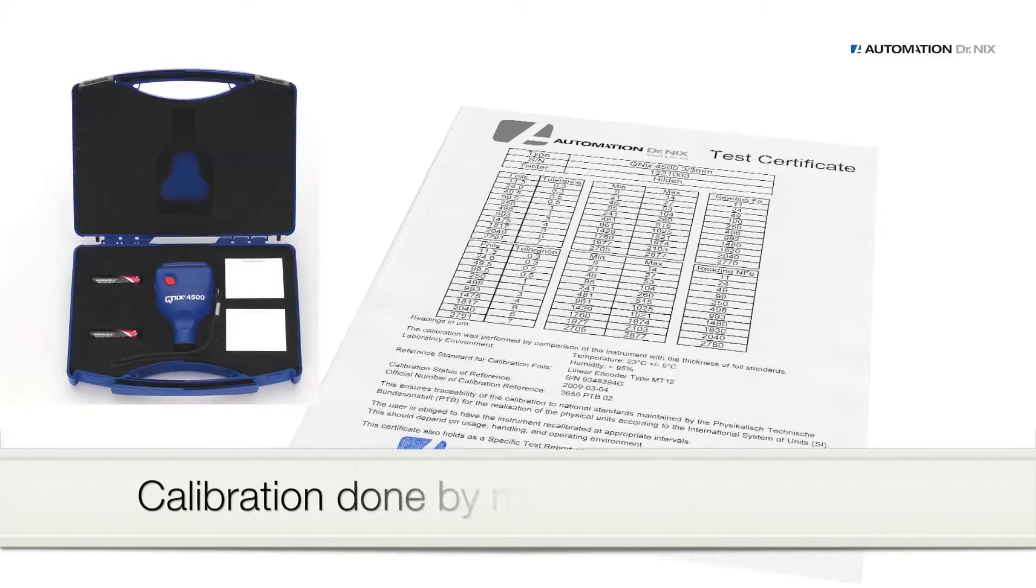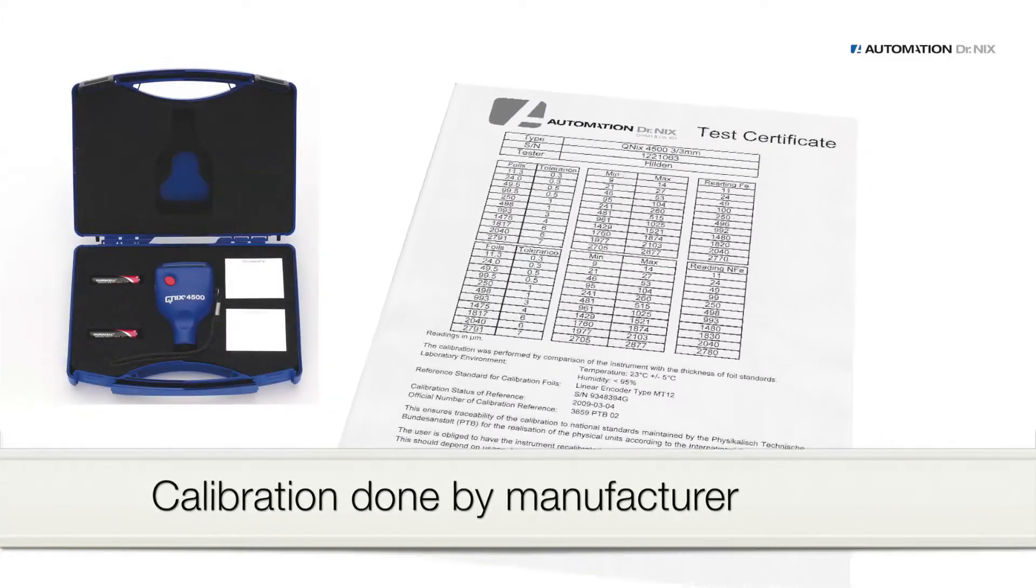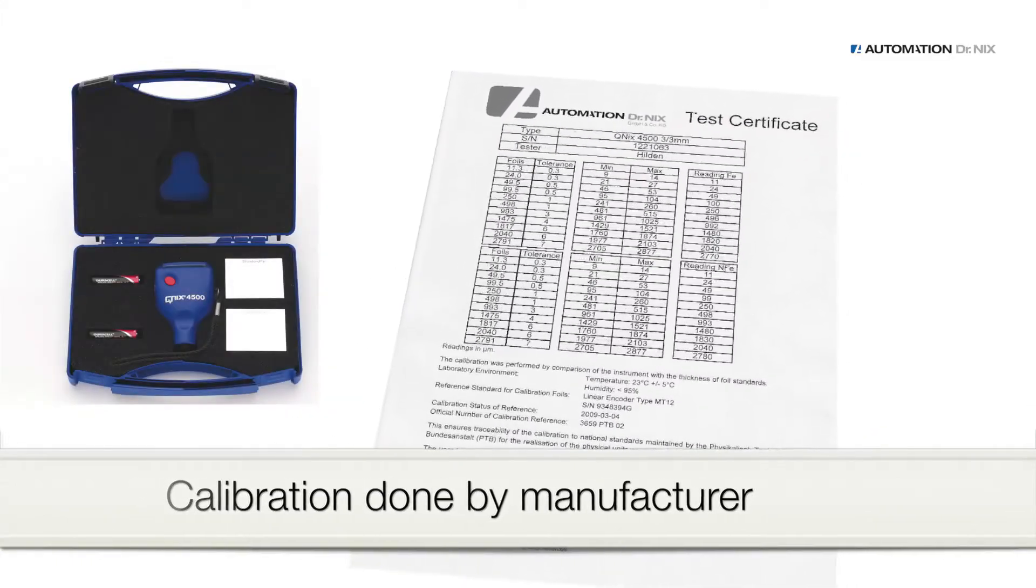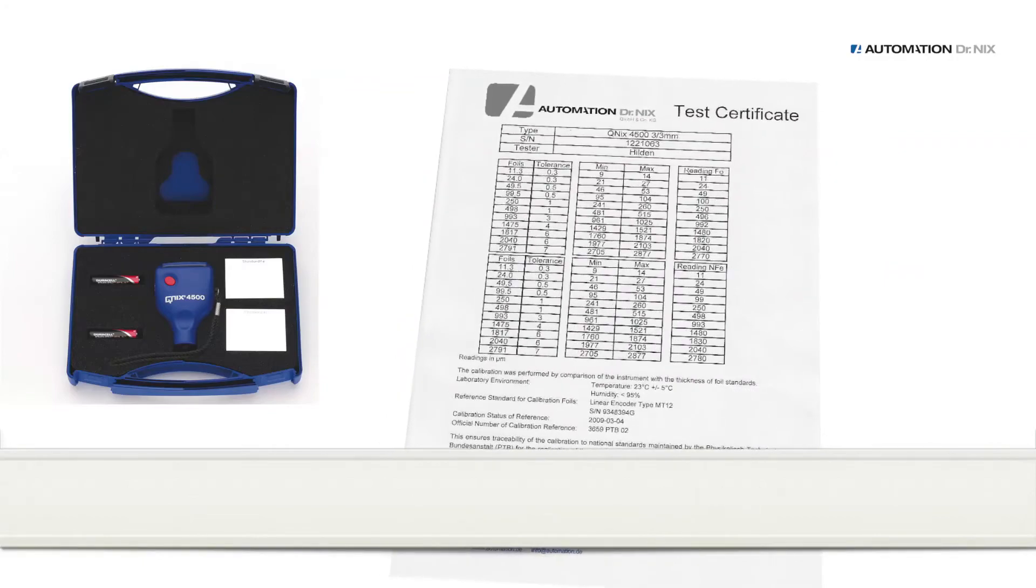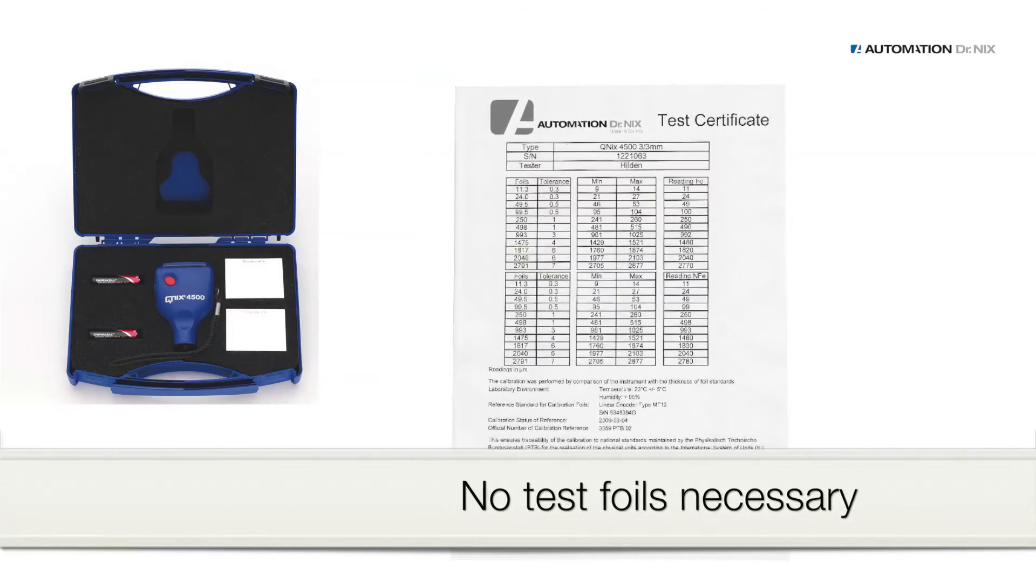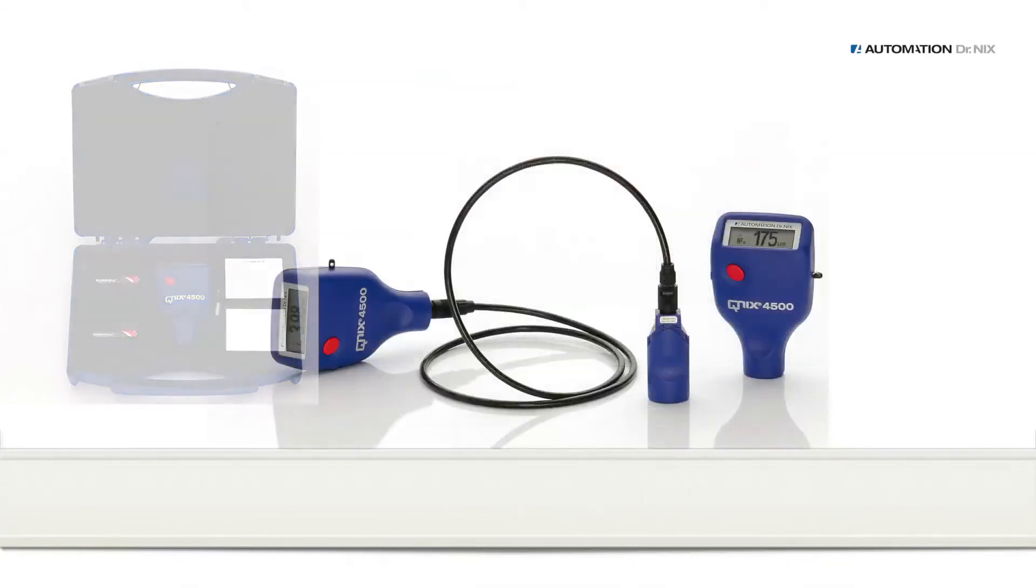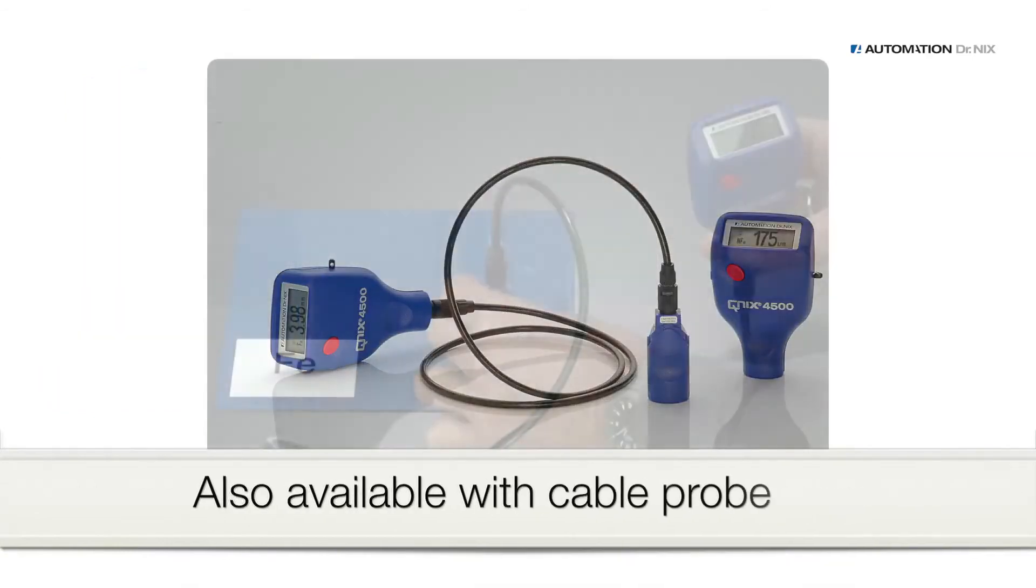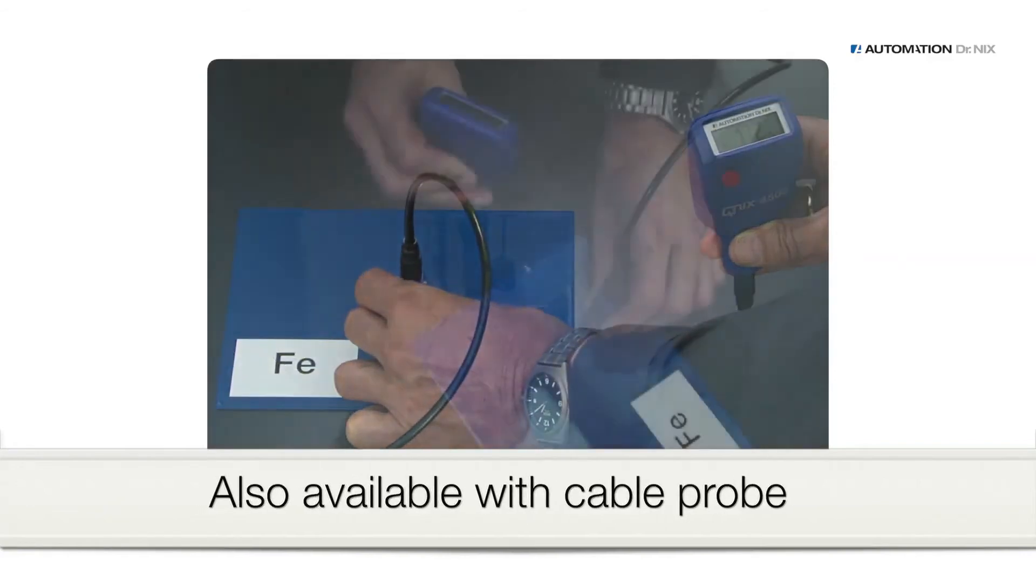The manufacturer calibrates the gauge as proven by the provided certificate. The accuracy of our gauges is maintained and it is unnecessary to calibrate the gauge prior to each measurement based on test foils, as has to be done with gauges from other manufacturers. The QNIX 4500 is also available with cable probe.